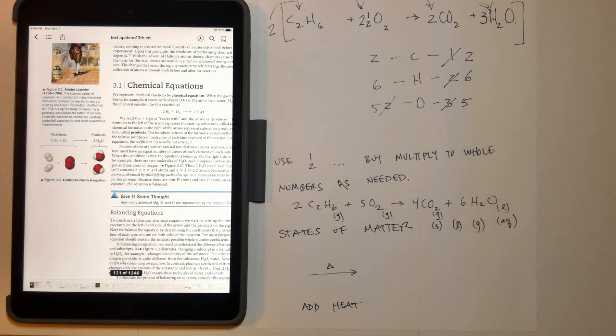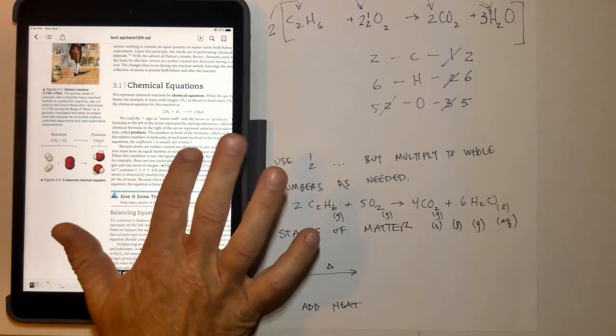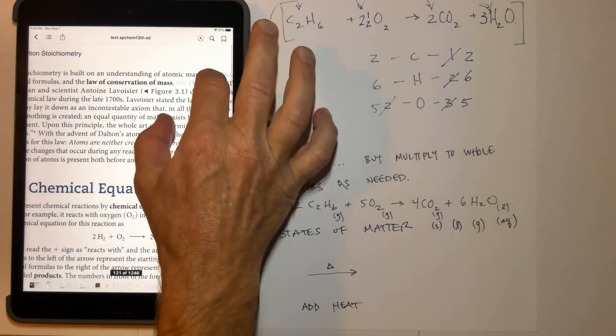Also, every once in a while, you'll see a little triangle over the top of an arrow. That just means that you added heat to the reaction or you did something to the reaction to cause it to occur. That's a good little intro to chemical reactions and balancing them and following the law of conservation of mass.